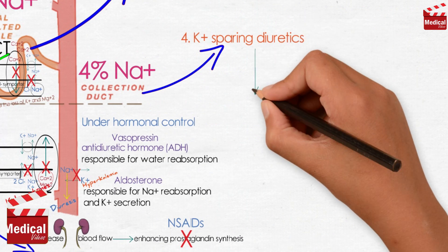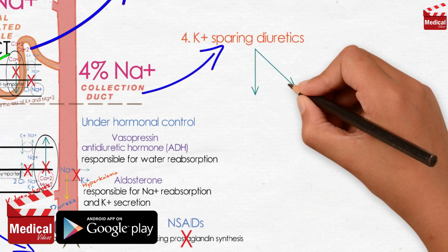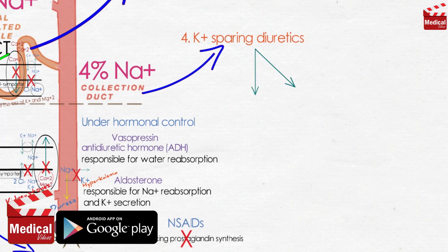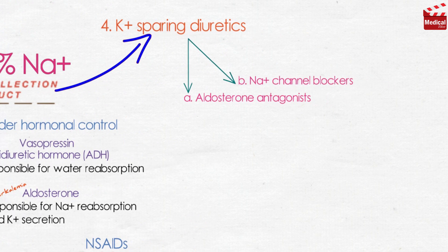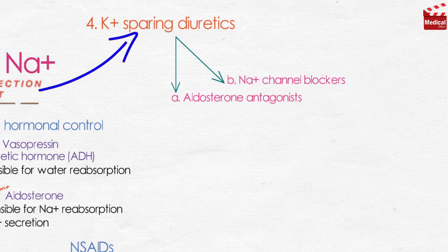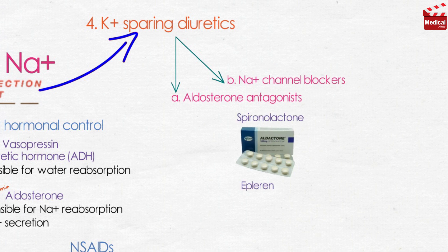There are two categories of drugs within this group: aldosterone antagonists and sodium channel blockers. Let's first talk about aldosterone antagonists, such as spironolactone and eplerenone.